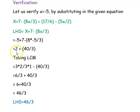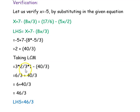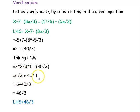To add these terms, the denominators must be the same. We take the LCM and multiply 2 by 3 over 3 to get a denominator of 3: 3 times 2 divided by 3, minus 40 divided by 3. So 3 times 2 is 6 and 3 times 1 is 3, giving 6 divided by 3 plus 40 divided by 3.